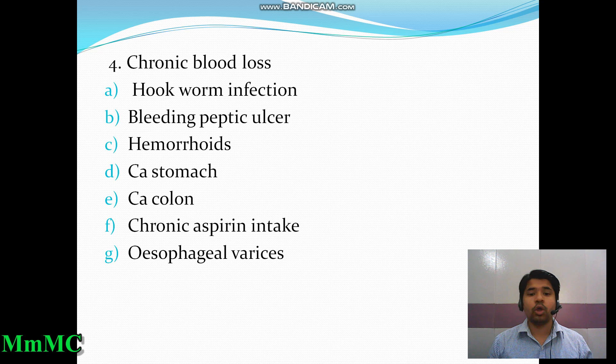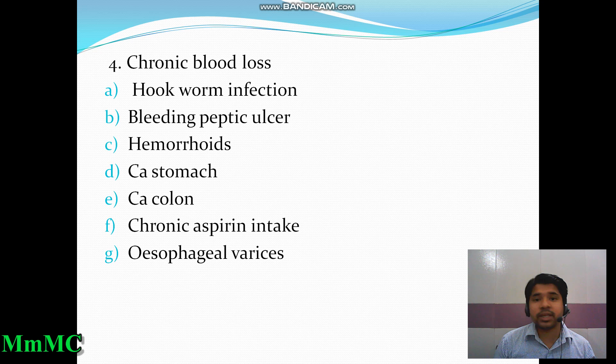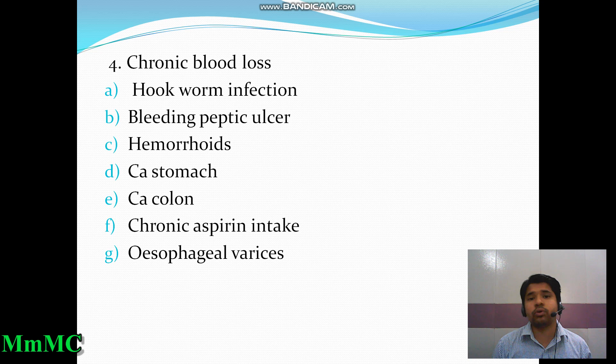Chronic aspirin intake or NSAIDs (non-steroidal anti-inflammatory drugs) can also cause peptic ulcer disease. Additionally, esophageal varices lead to loss of blood through hematemesis — vomit containing blood — causing blood and ultimately iron loss from the body, leading to iron deficiency anemia.